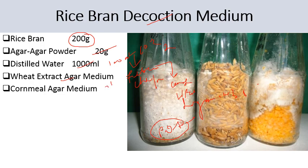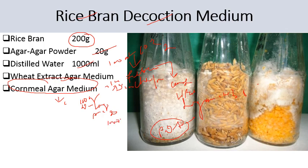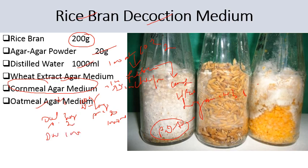Next comes wheat extract agar medium. It contains wheat grains 32 grams, agar agar powder 20 grams, and distilled water 1000 ml. Its procedure is the same as rice bran decoction. Next is corn meal agar medium, which contains corn meal 100 grams, dextrose 10 grams, agar agar powder 20 grams, and distilled water 1000 ml — procedure again same as rice bran decoction. Next is oatmeal agar medium: oatmeal flakes 30 grams, agar powder 20 grams, distilled water 1000 ml — procedure similar to rice bran decoction.